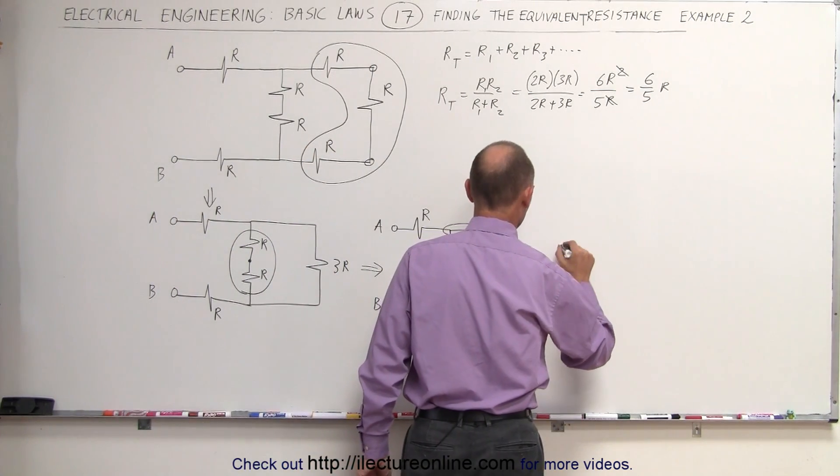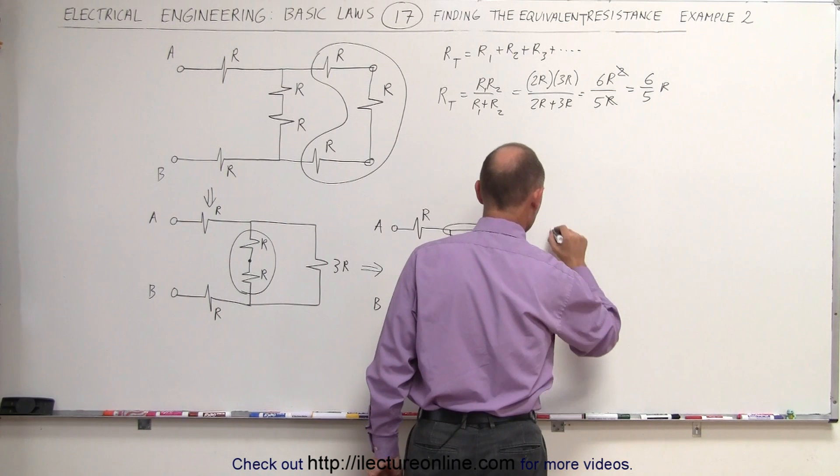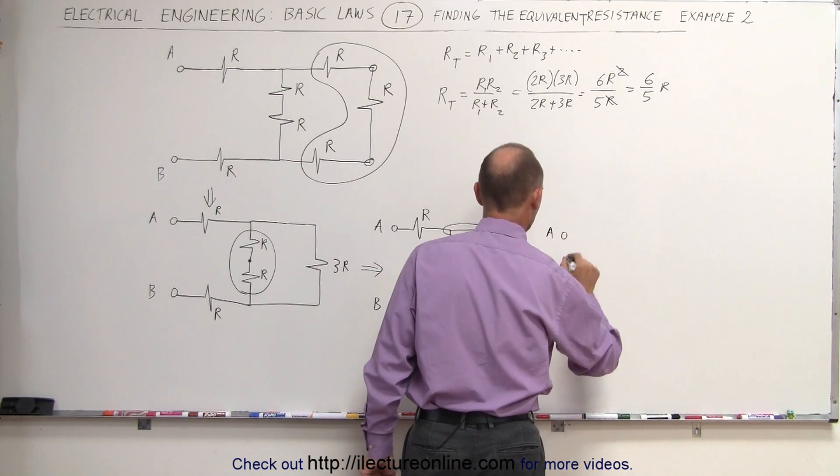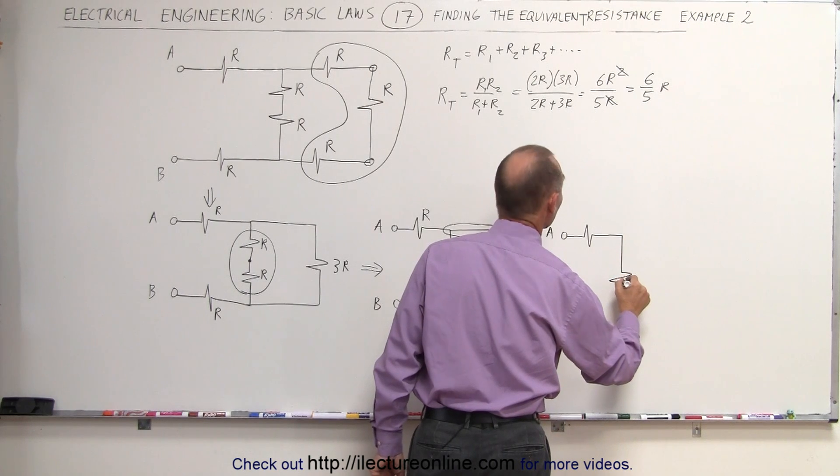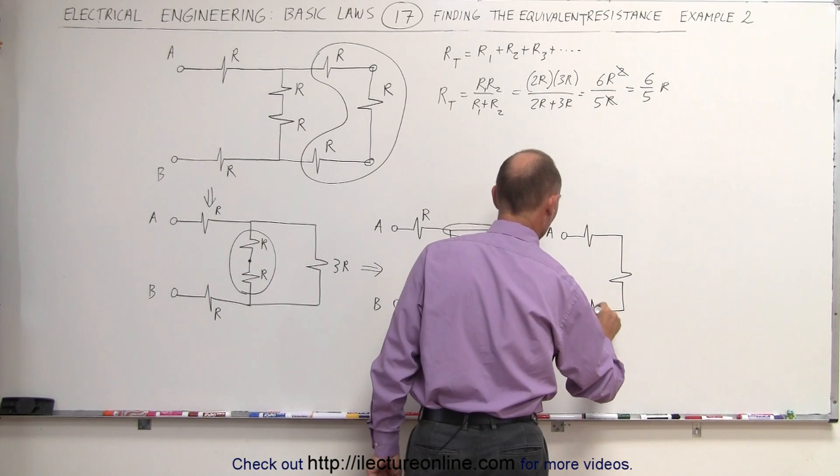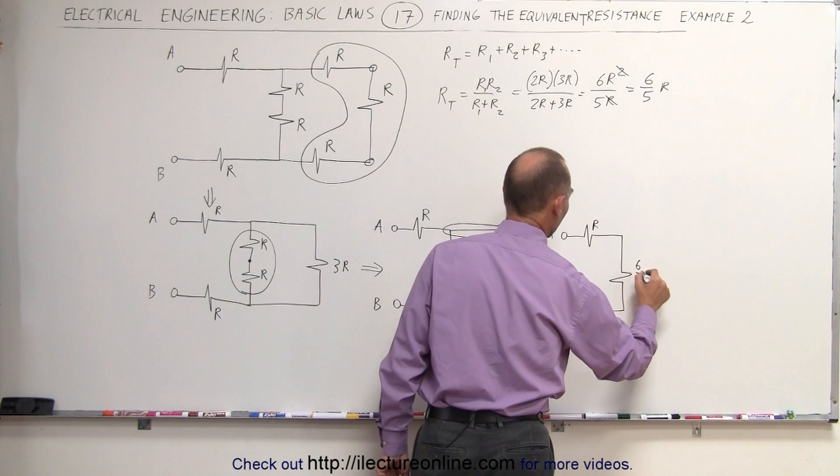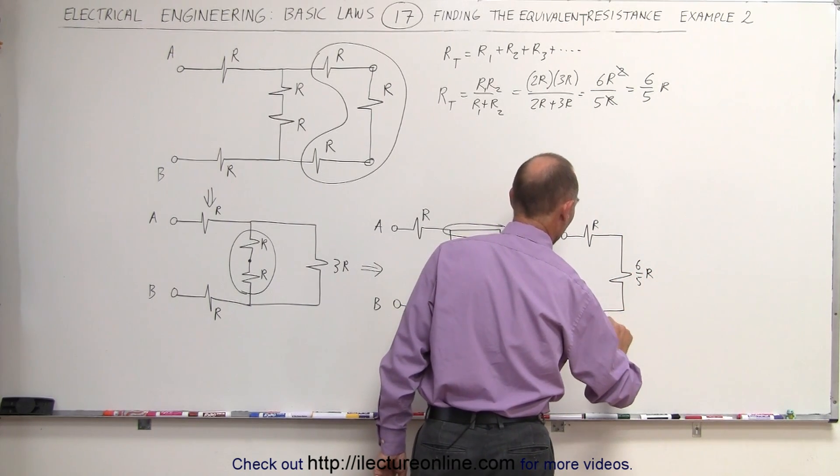We can now redraw the circuit. This is A and B. So we have our R resistor. This now becomes 6 fifths R, and this becomes R. So R, 6 fifths R, and R.